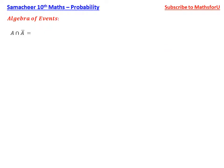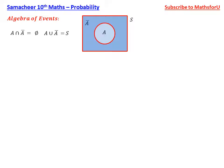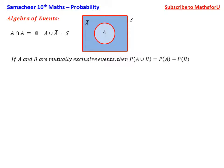A intersection A bar is a null event. In the sample space, A union A bar equals S. If A and B are mutually exclusive events, then P of A union B is equal to P of A plus P of B.